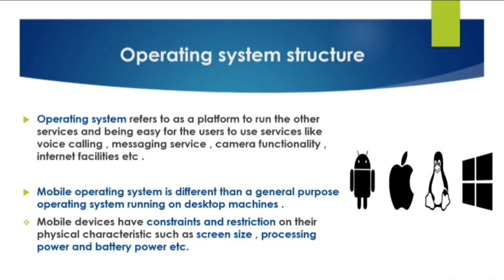Next is operating system structure. An operating system refers to a platform that runs other services, making it easy for the user to access services like voice calling, message service, camera functionality, and internet facility. A mobile operating system is different from a general-purpose operating system running on desktop machines, as mobile devices have constraints such as screen size, processing power, and battery power.